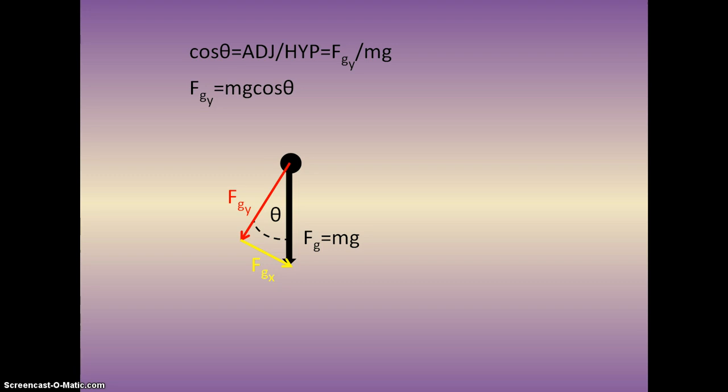Now I realize that in the past Y has been sine, however for inclined planes you will switch this. That's the only trick you have to remember. Now, similarly we have to talk about FGX. FGX is opposite the angle and the hypotenuse is still mg. Opposite over hypotenuse is the sine of the angle. Multiplying both sides by mg, we get that FGX is mg sine theta.